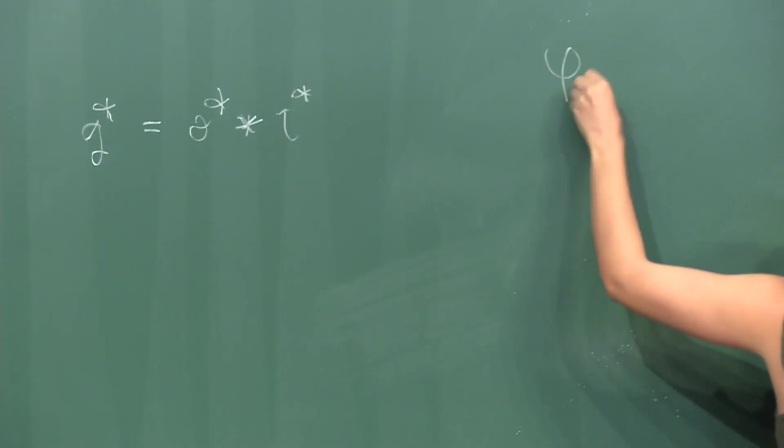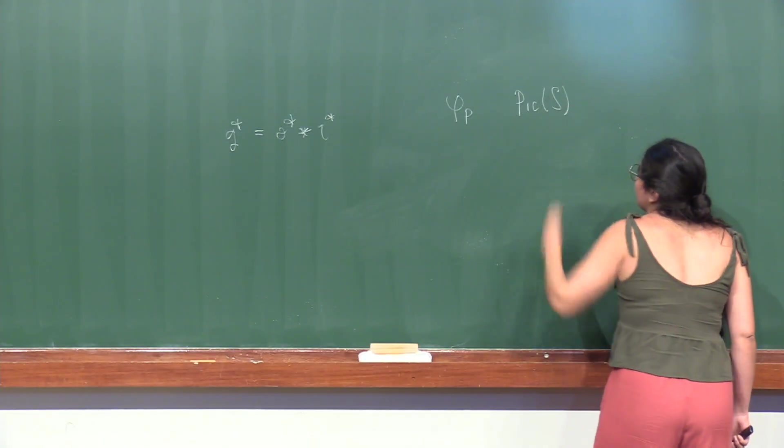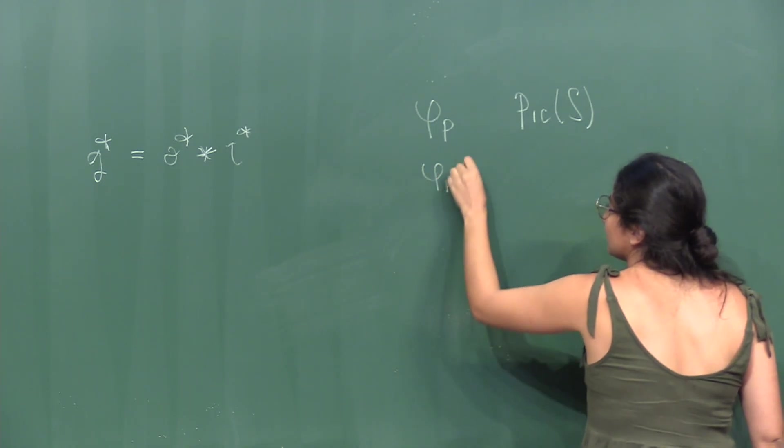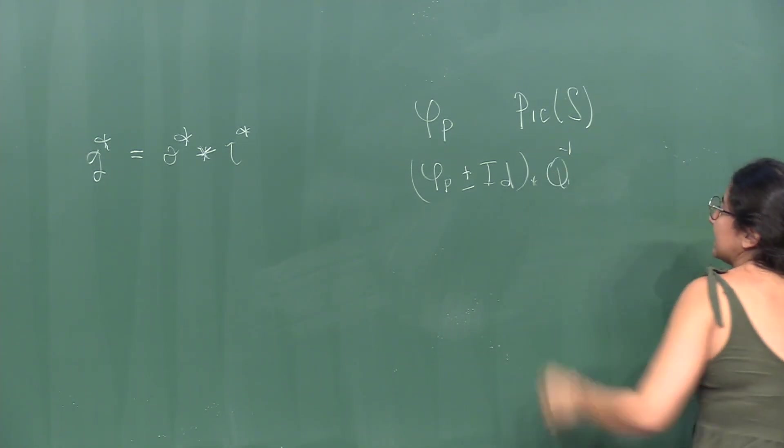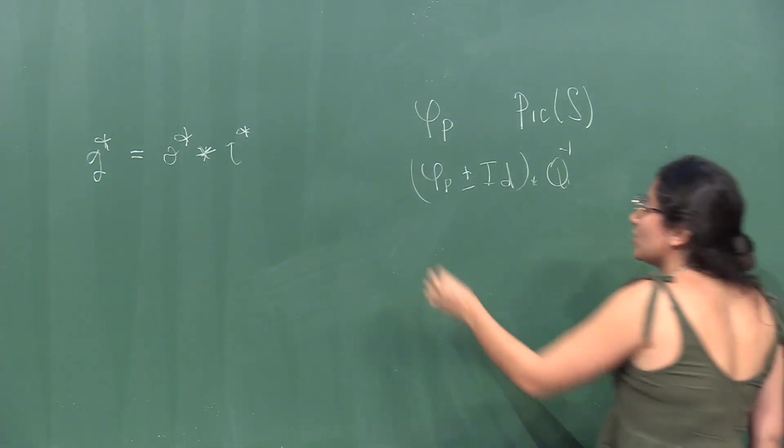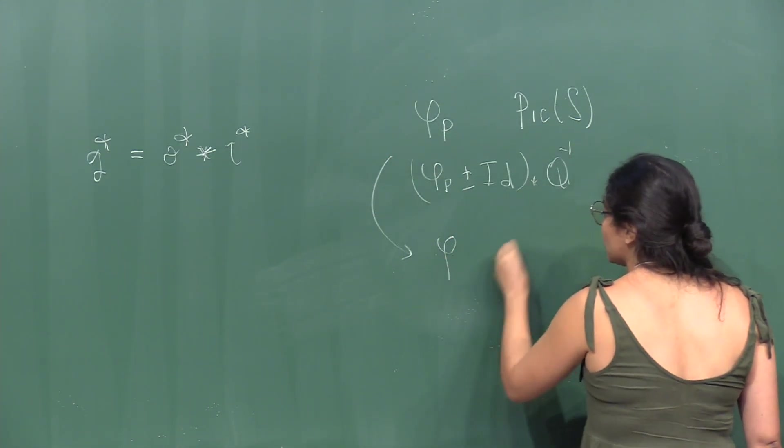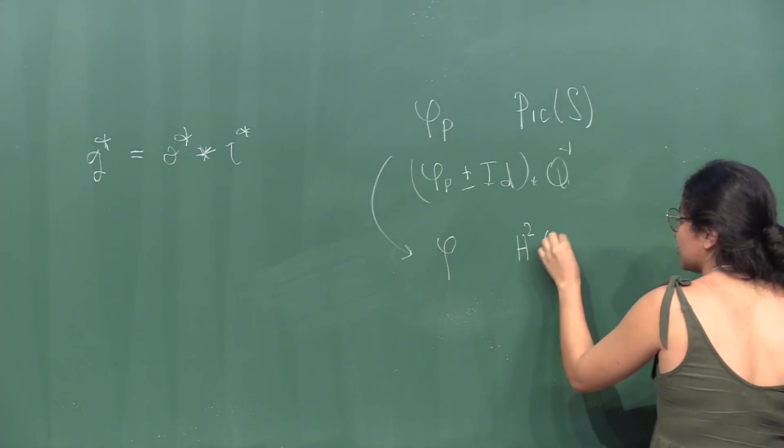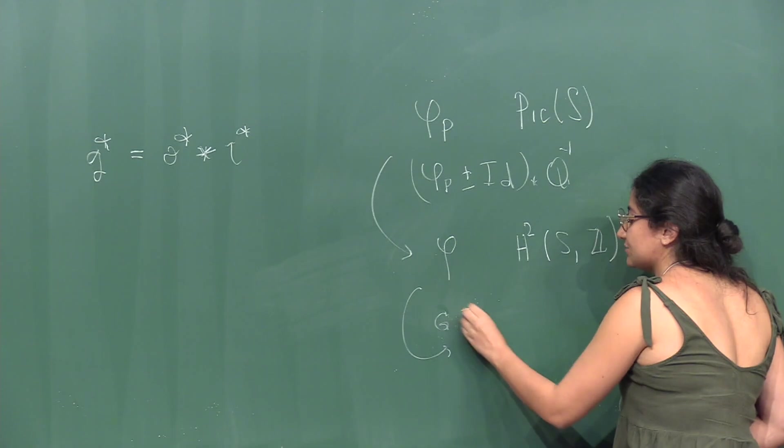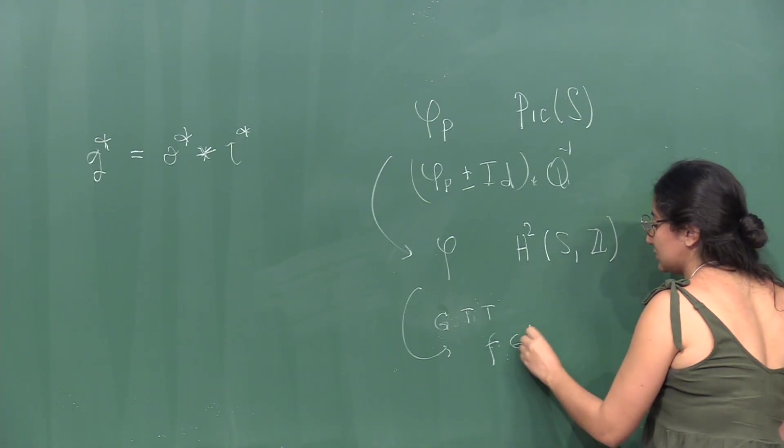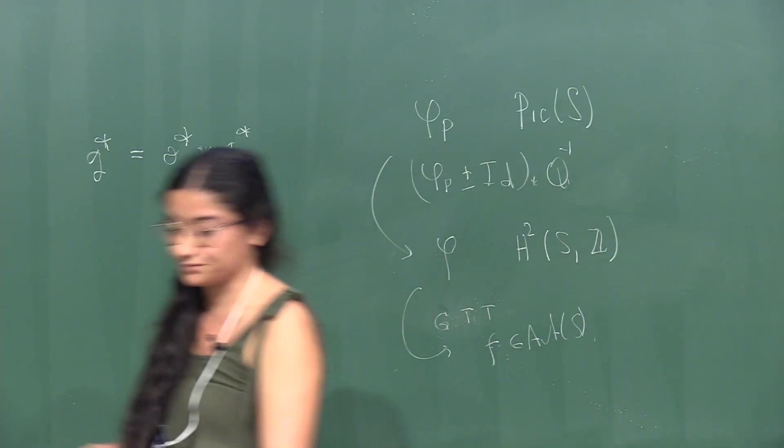If we have an isometry of the Picard lattice such that this matrix here is an integral matrix, we know that it can be extended to an isometry of the lattice H². So for each, we verify that it preserves the ample cone and the space of two-rational forms. So we can apply the global Torelli theorem to obtain an automorphism of the surface.